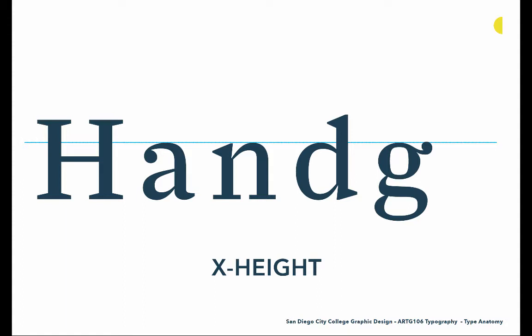Then we have the x-height — another imaginary line that exists within typefaces. The x-height is how high all of the lowercase letter forms come. The lowercase d has an ascending stroke coming above the x-height, but the bowl on the d is right there at the x-height. The x-height is determined within the design of a typeface. Changing the x-height will give different effects — typefaces that have a high x-height are much easier to read than typefaces with a lower x-height, so this can really affect readability as well as the feeling or look of the typeface.